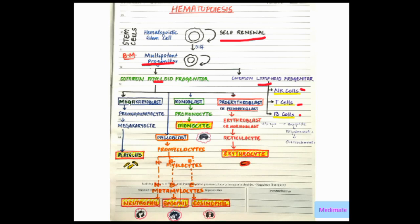Then we look into the myeloid series. The common myeloid progenitor gives rise to four kinds of cells which have the suffix blast. Blast means immature precursor cells. Therefore, you can see each word ends with blast.